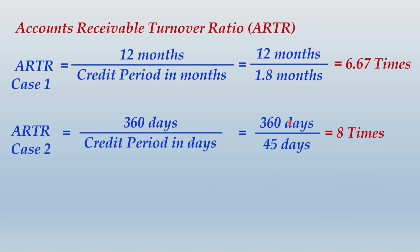Notice one thing: whenever the credit period is in number of days — like 30 days, 45 days, 90 days, 60 days — basically a number which is a divisor of 360, we generally tend to assume 360 days in the year. Throughout financial management, one notion you will have to follow: a month comprises 30 days, a year comprises 12 months, so 12 multiplied by 30 gives 360 days in the year. It is okay to assume 360 days in the year; however, if you are doing that, you should write that assumption in your answers.